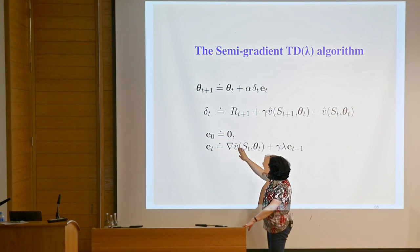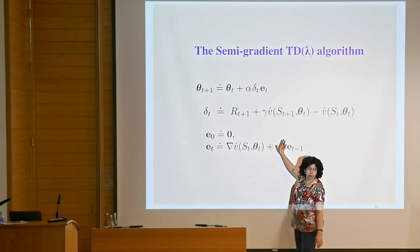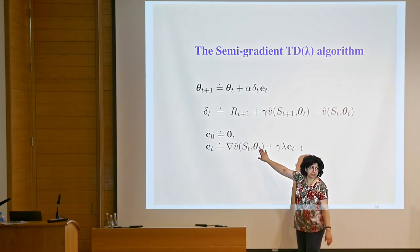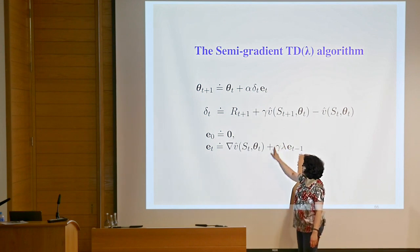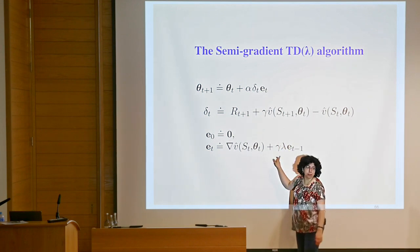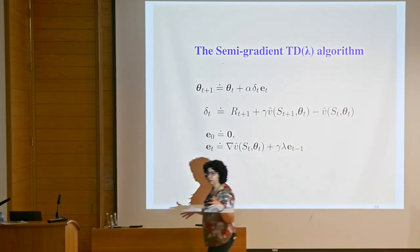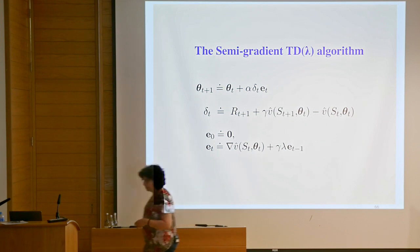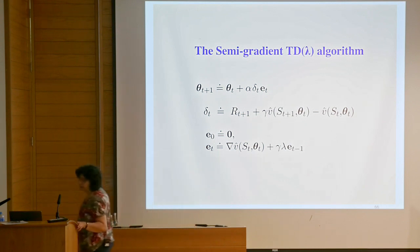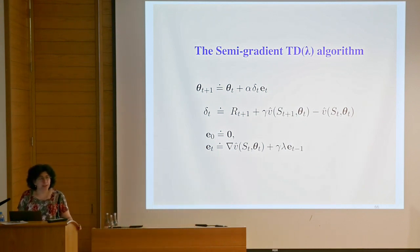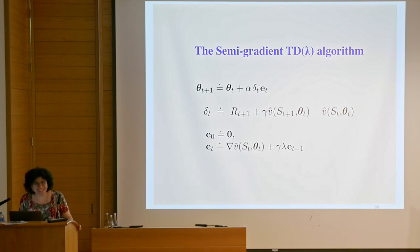If we set lambda to 0, we get exactly TD0. If we set lambda to some other intermediate value, we get this kind of propagation of gradients a little bit everywhere. Of course, lambda is a parameter, so you now have yet another thing to optimize. That creates a trade-off.